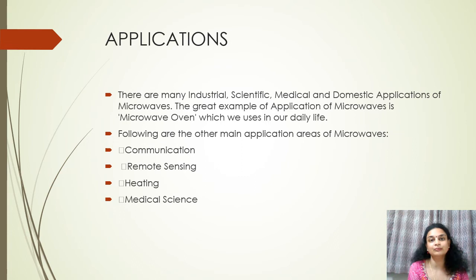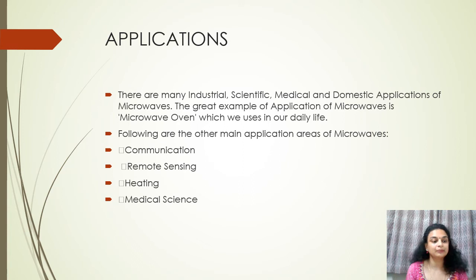We also have sensitive microwave receivers, which are used in radio astronomy to detect and study the electromagnetic radiation present from the sun. Such receivers are also used to study the noise radiated from plasma, and the information helps us to understand the mechanism responsible for the existence of plasma.